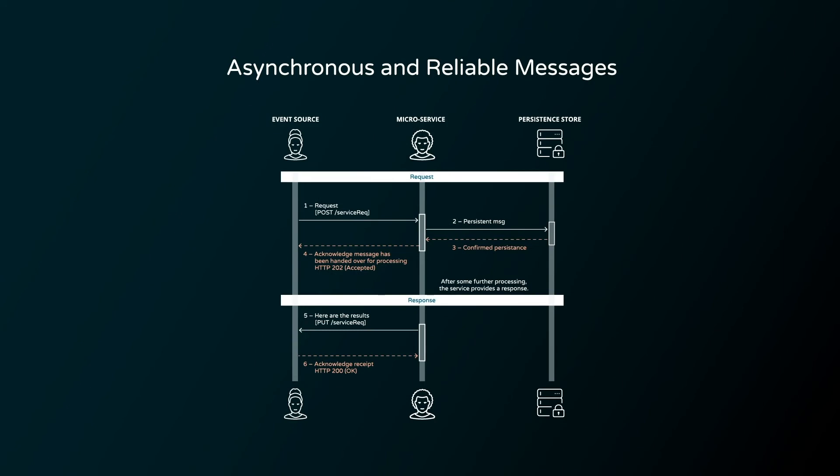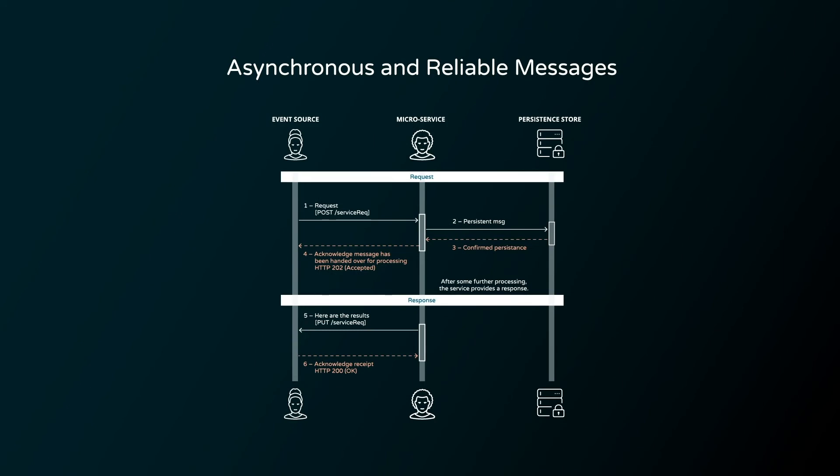An aside on reliability: since the Mojaloop platform needs to be robust for all operations and quality of network connectivity, we use asynchronous and reliable messaging patterns, which minimize resources and give the maximum chance of messages getting through when the quality of network connectivity between the hub and DFSPs is variable.